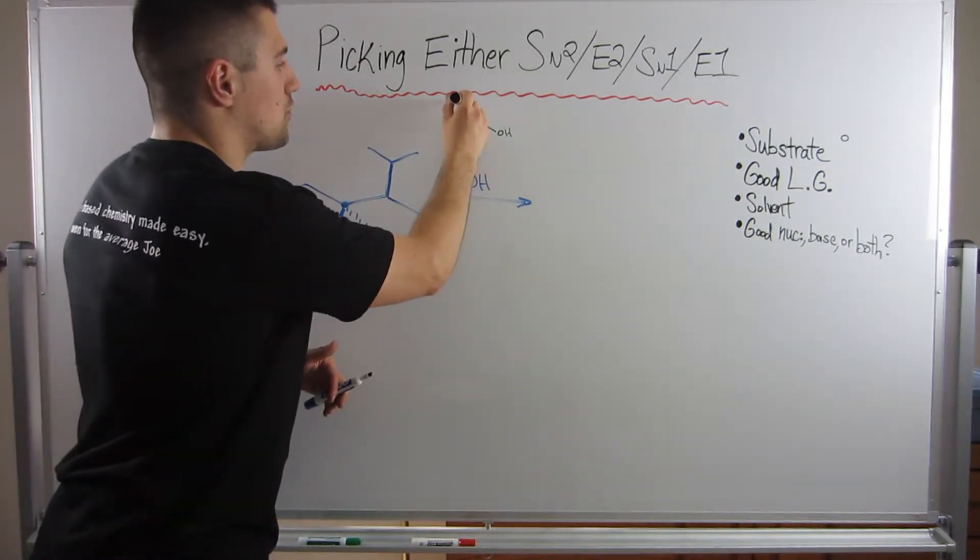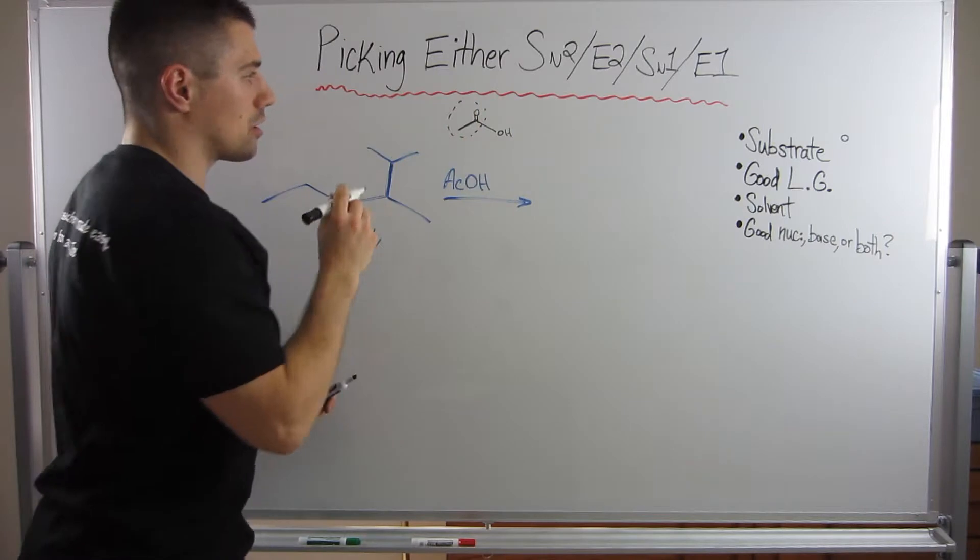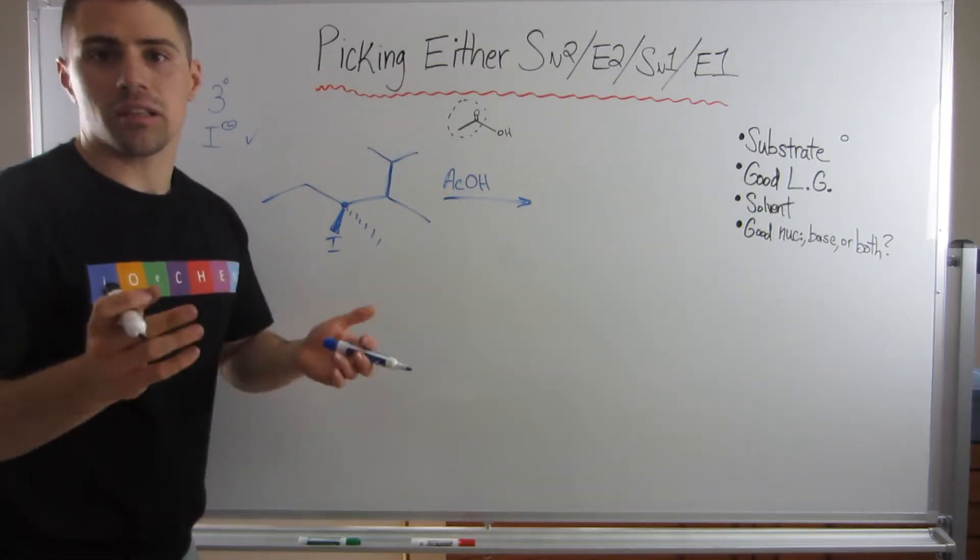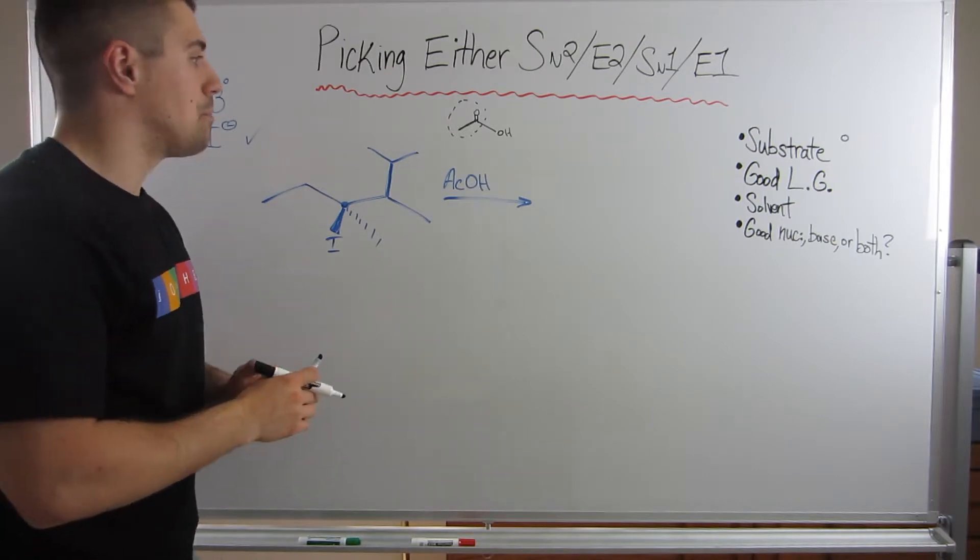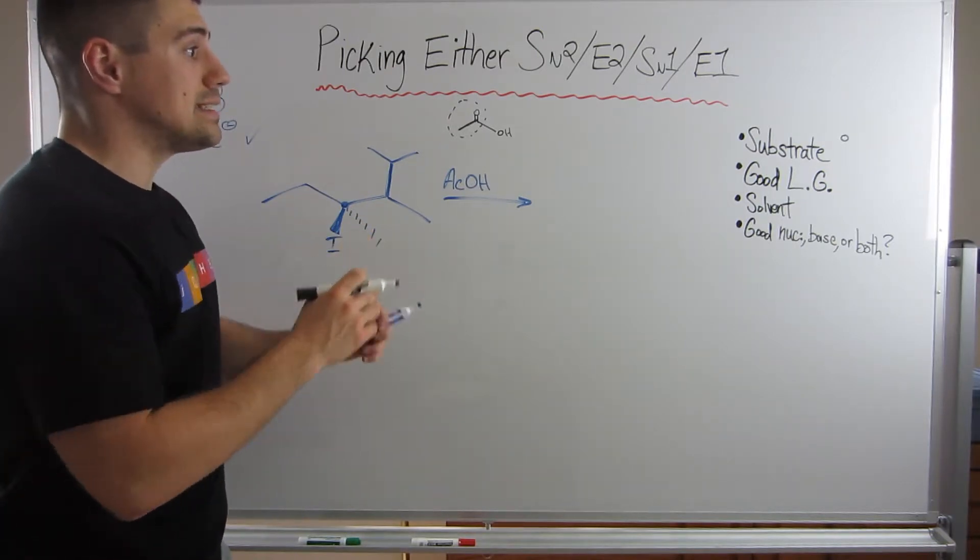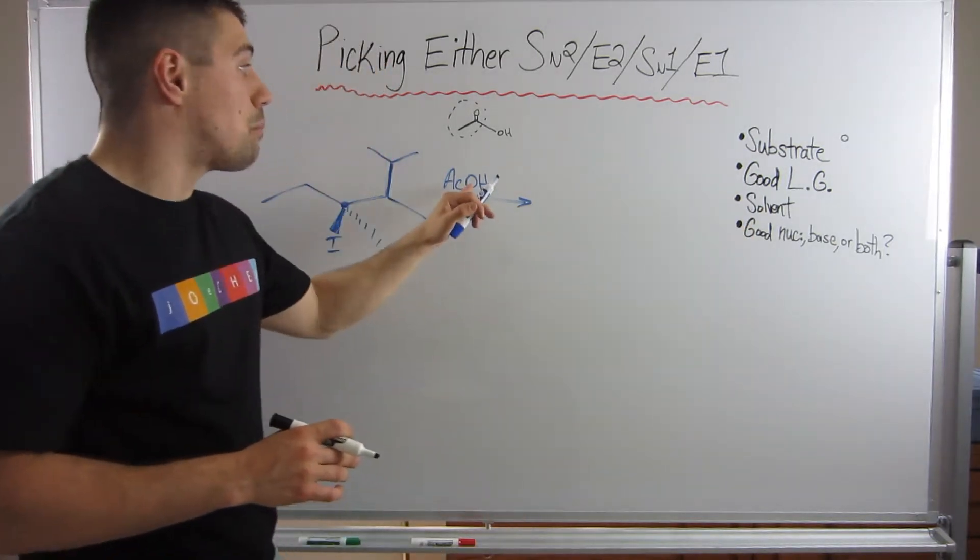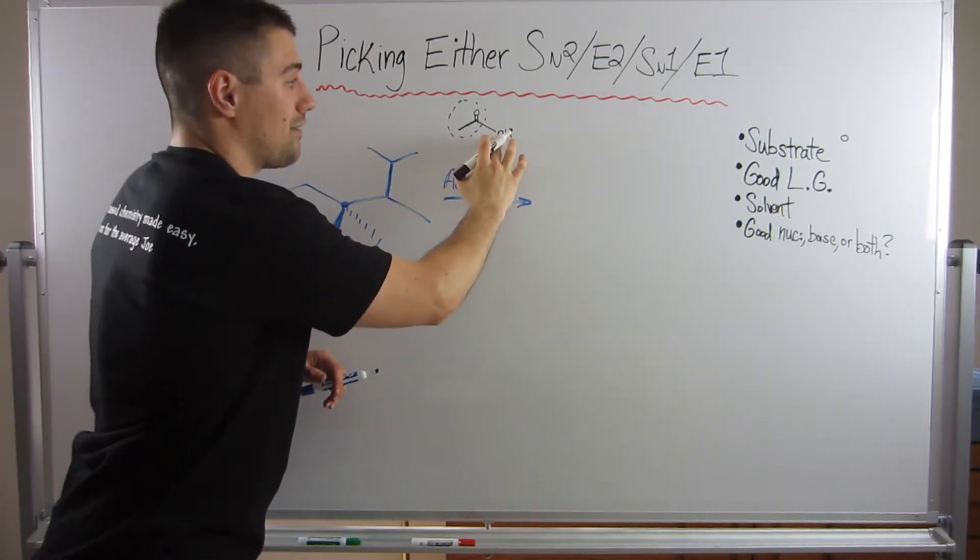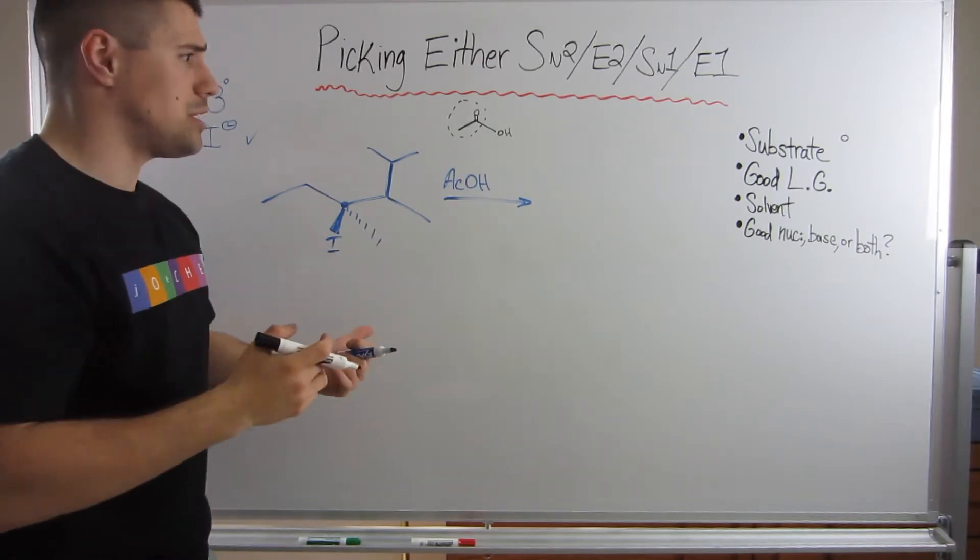And you're going to see that a lot through organic chemistry. So something to get used to it now. So we can see that our solvent is polar protic, right? It's definitely polar. And we see this electronegative atom bonded to hydrogen. So we got a polar protic situation.